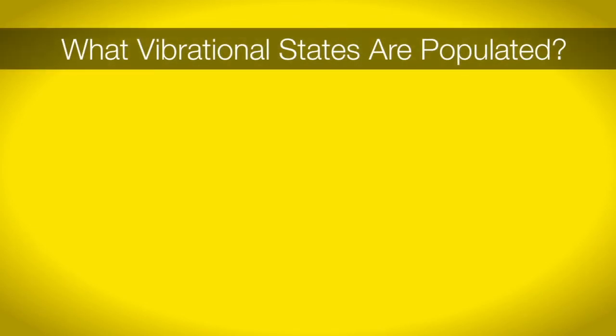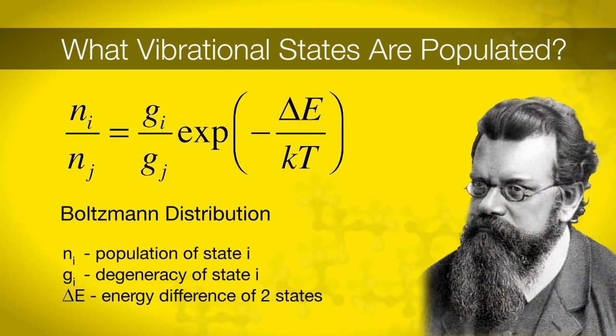The intensity of the transition in our spectrum gives us information on the population of states. We will explore this in more detail in an upcoming experiment, but there are a few general ideas you should be aware of. The population of energy states occupied in a macroscopic sample is described by the Boltzmann distribution, shown here. In this equation, N_i is the population of state i, G_i is the degeneracy of state i, delta E is the energy difference between the two states, k is Boltzmann's constant, and T is the temperature of the sample.